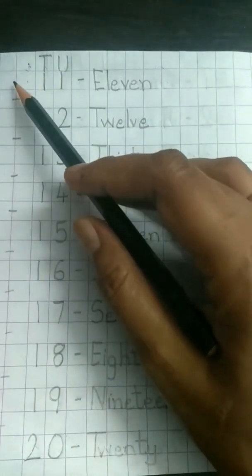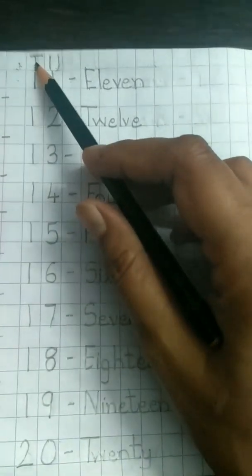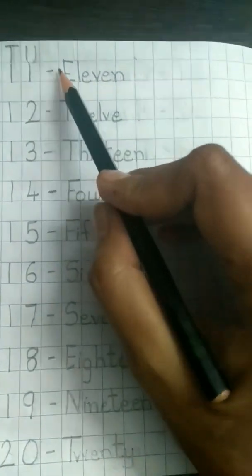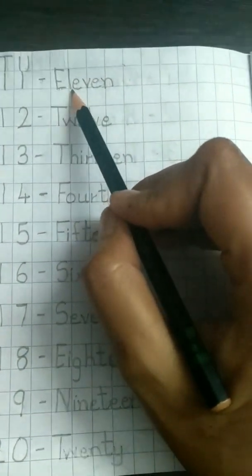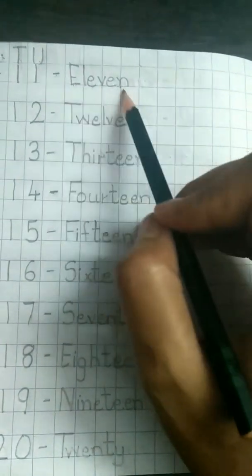So after T and U, on the next line, we will write number 11. That is 1, 10 and 1 unit. Then we put a dash and write the spelling. T, capital T, W, E, L, V, E, N. 11.